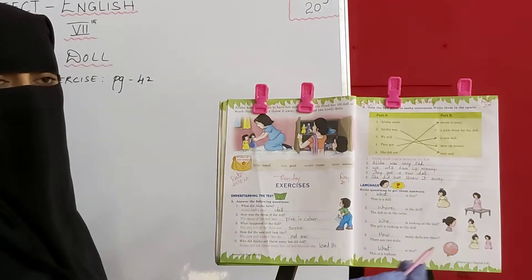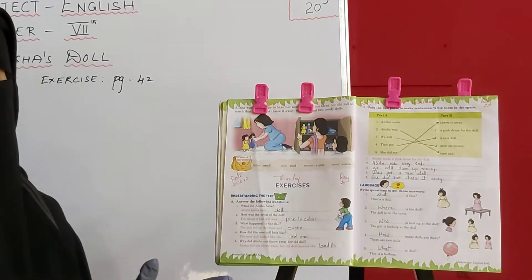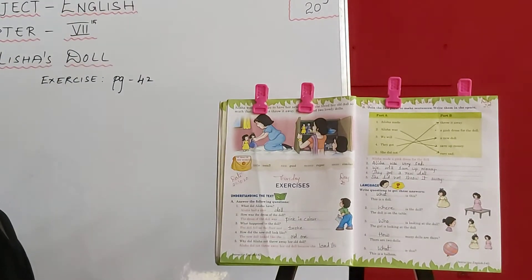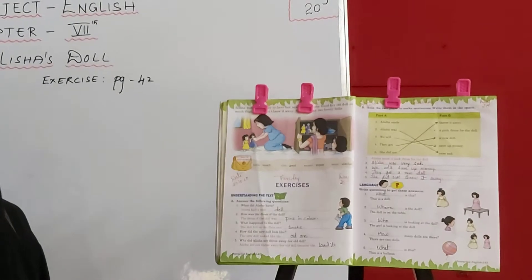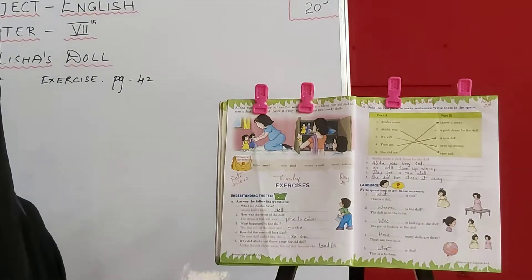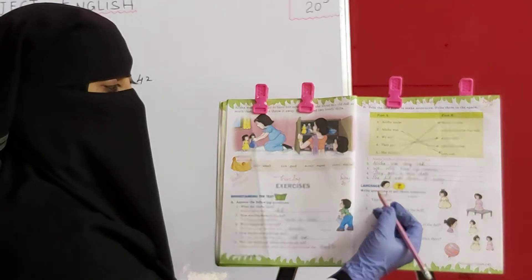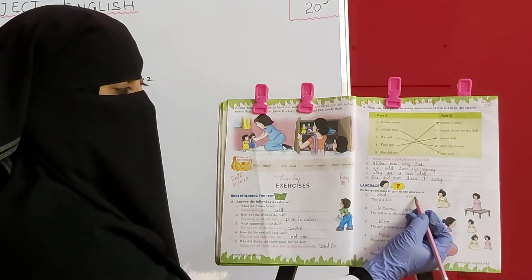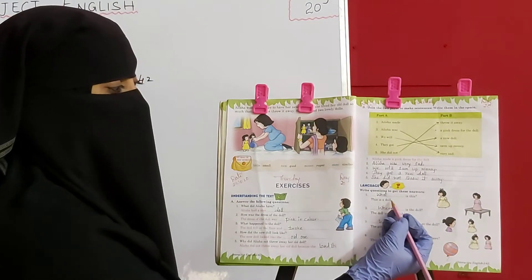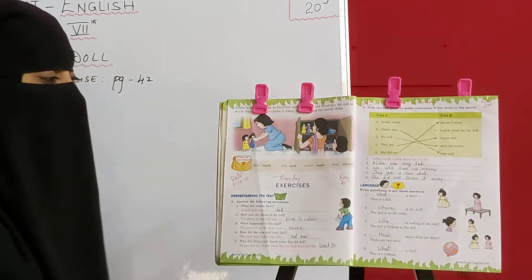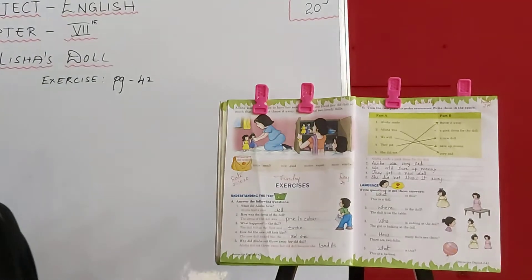Yeh ek doll hai. Toh humara question yeh sentence ka kya ho raha? Yeh kya hai? So: What is this? — This is a doll.